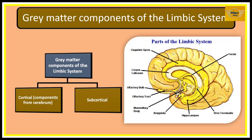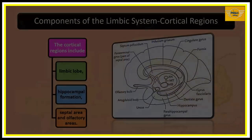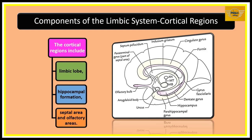Now we'll look at the gray matter components of the limbic system. These can be broadly divided into the cortical components, which are structures from the cerebrum, and the subcortical components, which are structures from the mesencephalon and the diencephalon — structures below the cerebral cortex. The cortical components are further classified into three major areas: the limbic lobe, the hippocampal formation, and the septal and olfactory areas.